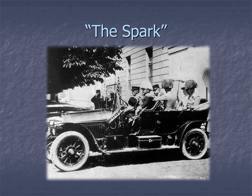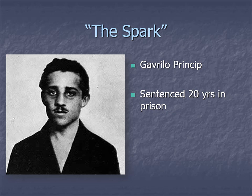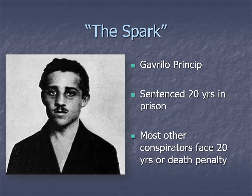Huge deal. Princip is sentenced to 20 years in prison because under Serbian law he was 19 years old, considered a minor at the time, and not eligible for the death penalty. Of the other assassins and conspirators, they face about 20 years in prison or the death penalty depending on who they were and their age. This punishment really doesn't seem like a whole lot, considering what is about to happen.